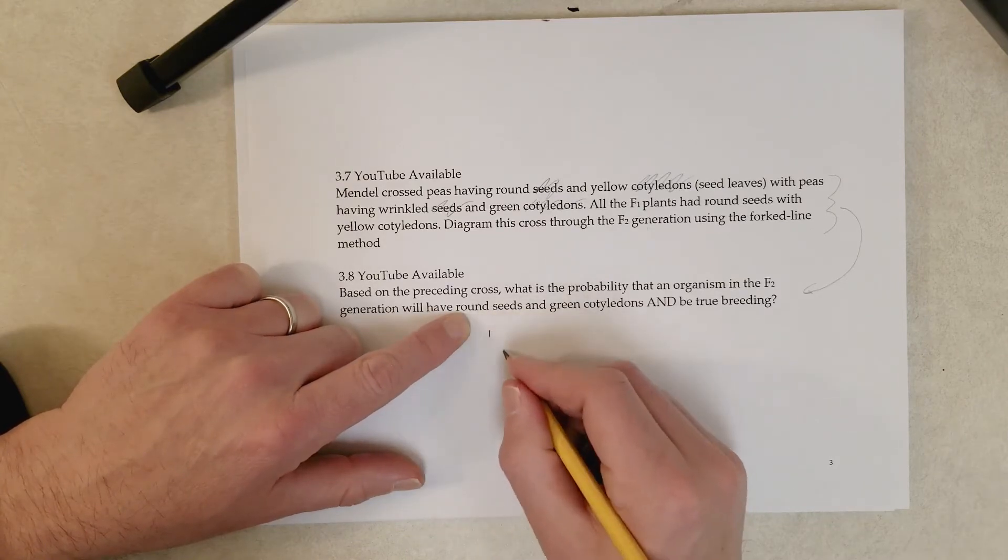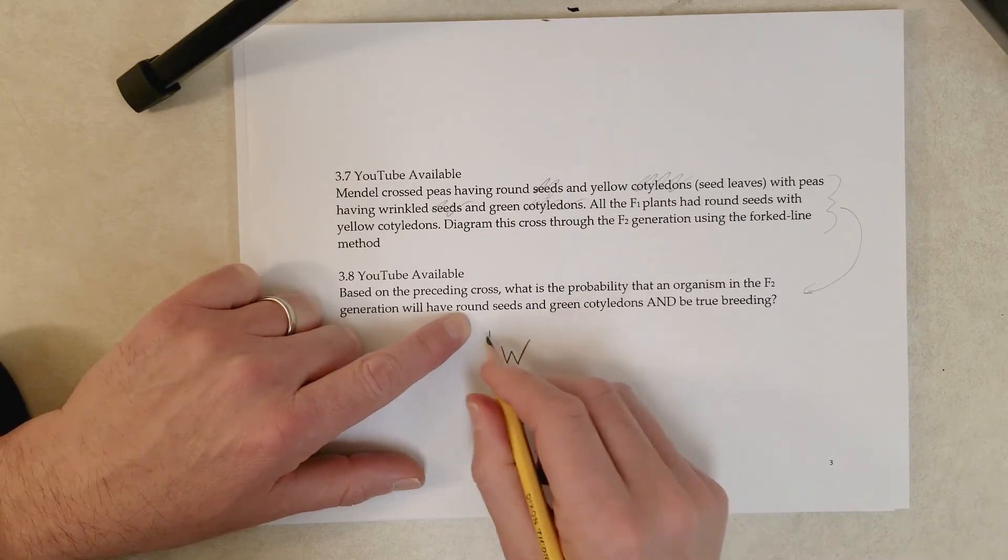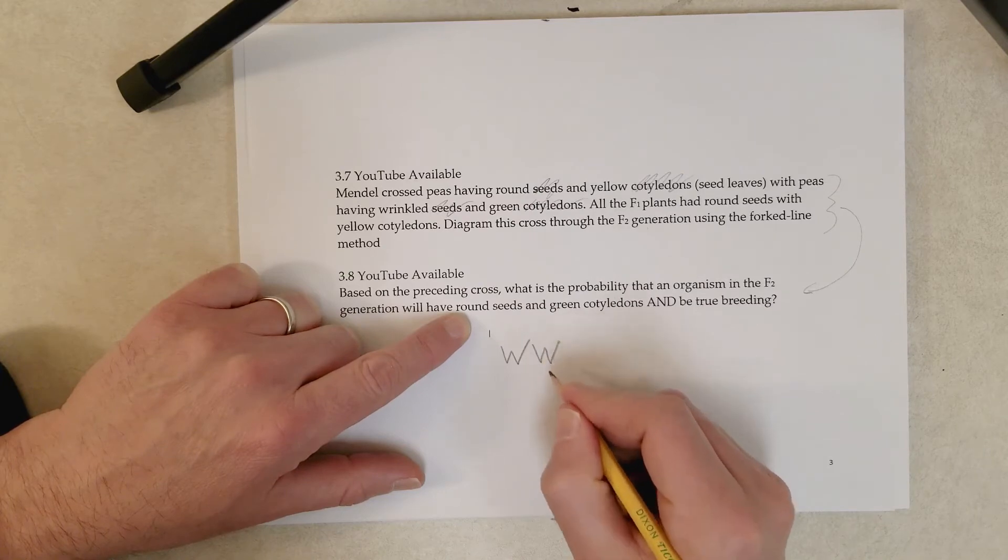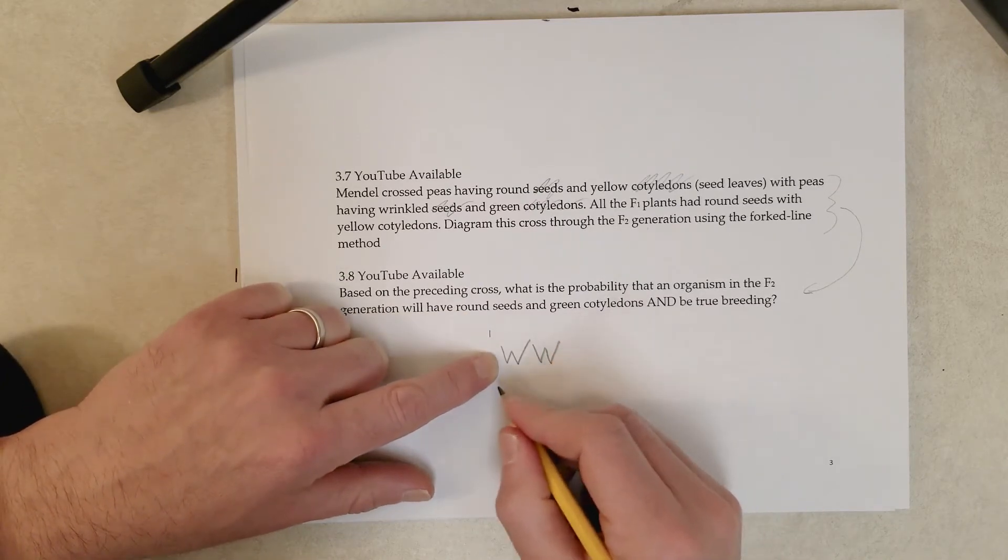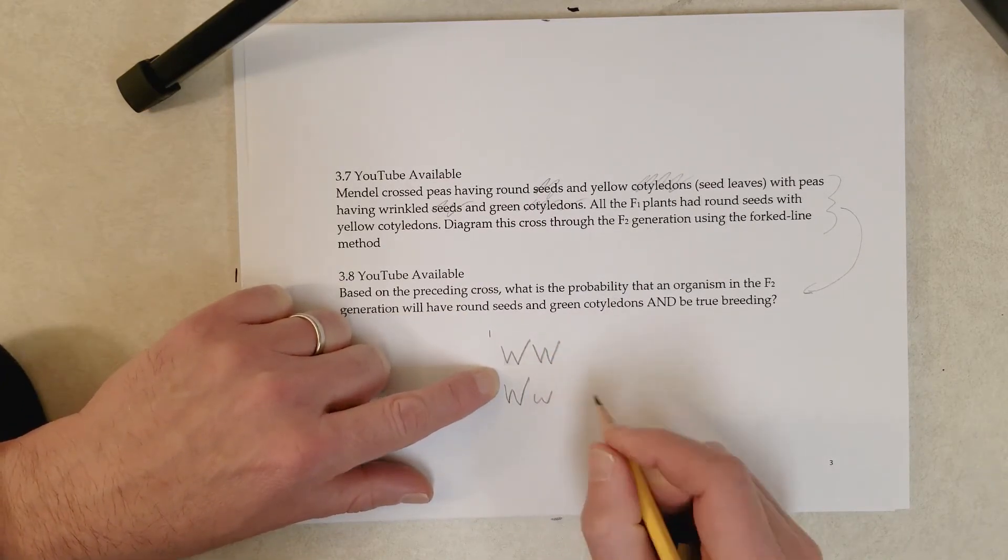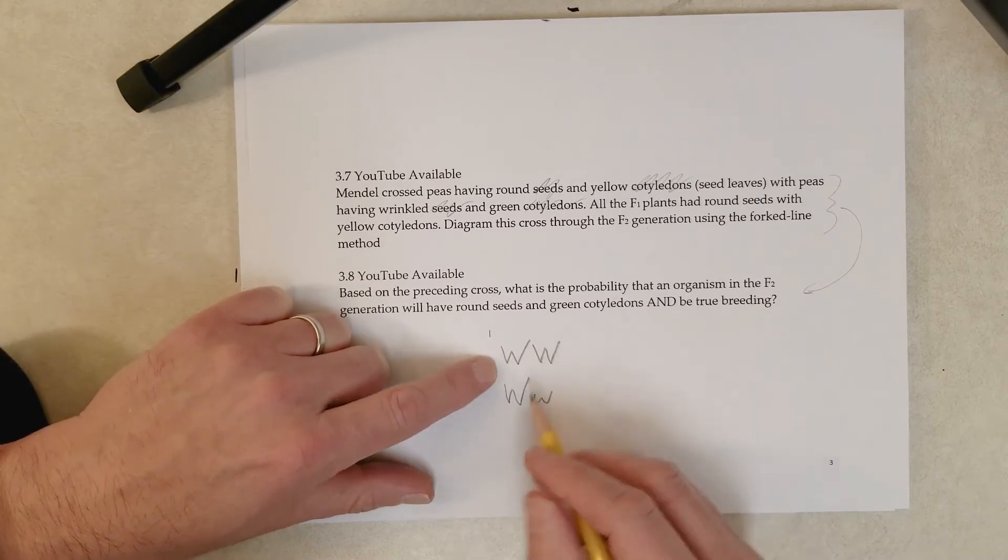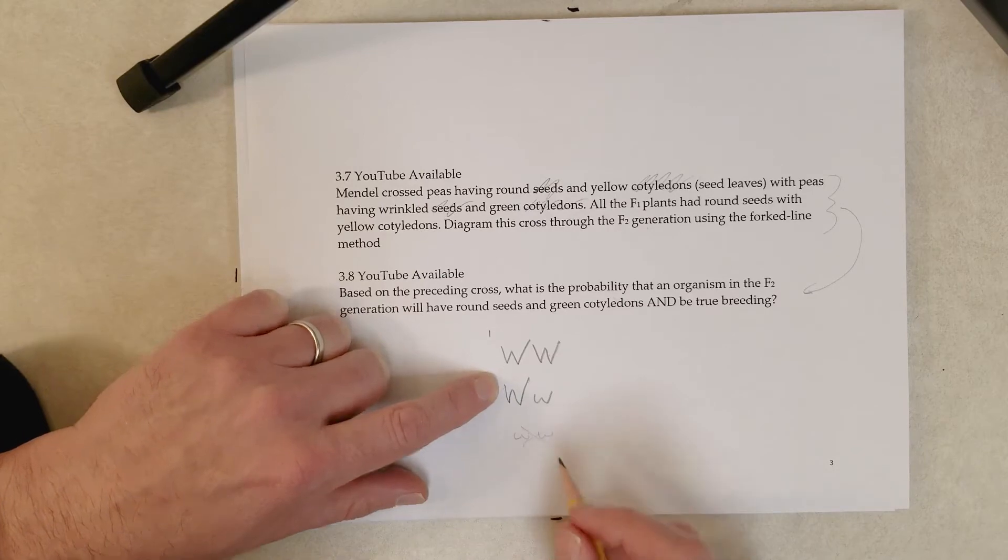So, round seeds, round is dominant, so they have to have at least one big W, so both of these genotypes can have round seeds. This one, that's wrinkled.